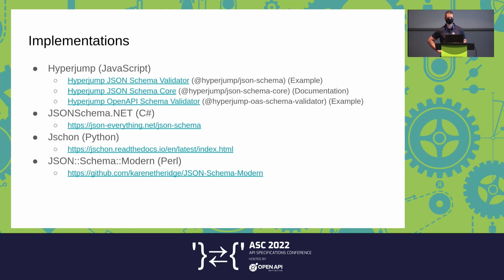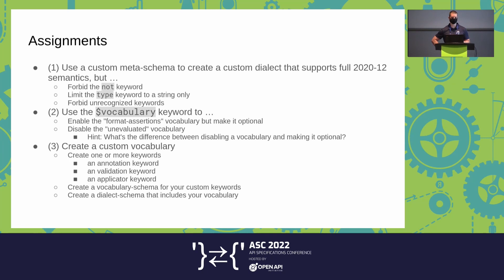There are four implementations that I know of that support the vocabulary system. The first one is one that I wrote. I'm going to give an assignment that we can all work on. If you want to work on anything other than the Hyperjump one, you're welcome to, but I probably won't be able to help because I don't know those implementations myself. Here's the assignment: use a custom meta schema to create a custom dialect that supports the full 2020-12 semantics but does not include the not keyword, and limits the type keyword to a string only, and forbids unrecognized keywords.